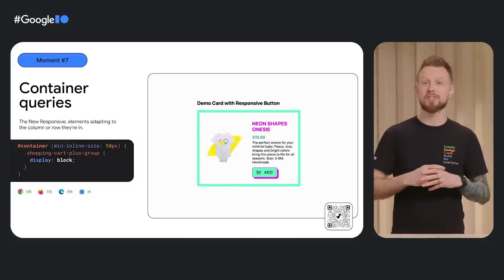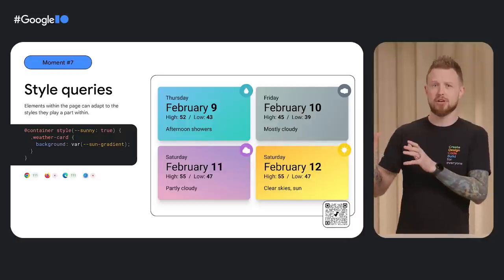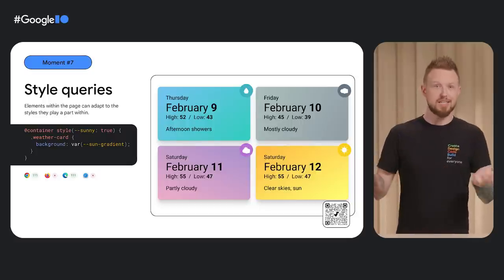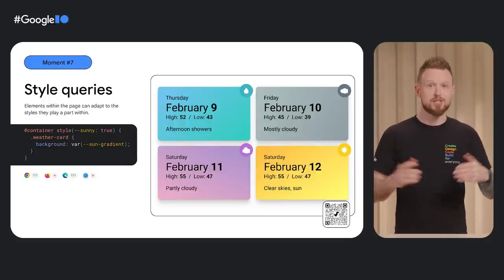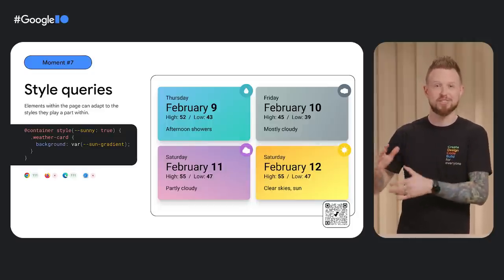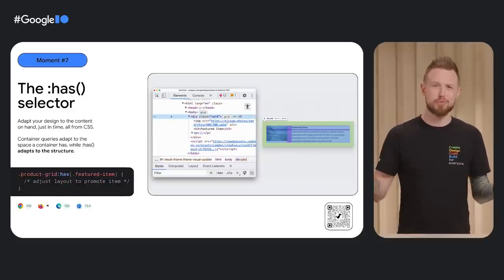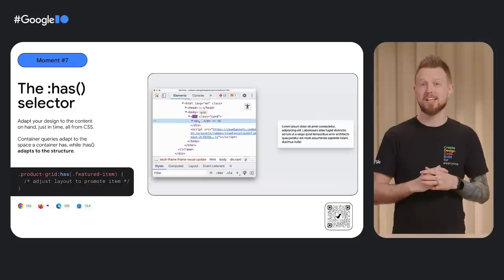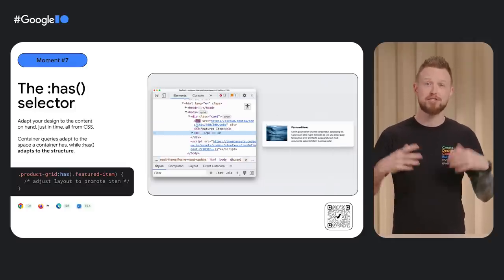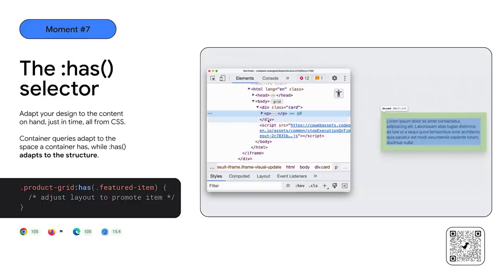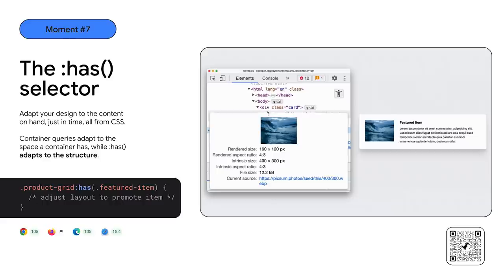With container queries also comes style queries. Here in this demo, each card adapts to a custom property set on it — if the CSS variable says sunny is true, then change the gradient and the icon to match being sunny. So we're not just tailoring a component to the space available, but the styles that it's been given. And then there's the :has selector, which has many superpowers, but in the context of micro-tailoring UI it allows adapting styles to the type and number of HTML elements found in the document. Here I show a component that changes its layout if it's featured, if it's got a header image, or if it has a product image — each change to the content results in a different style and layout: content-adaptive design.